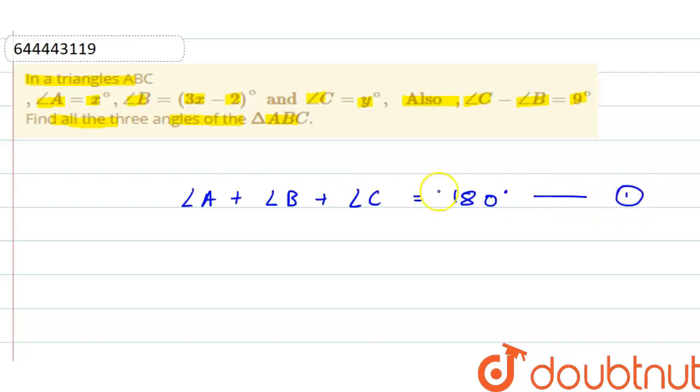Then, given that angle C minus angle B equal to 9 degrees. Let it be equation number 2.